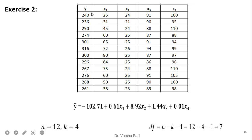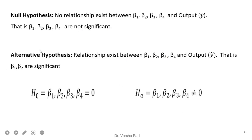Now we start exercise 2. The equation is given where y is the dependent variable and x1, x2, x3, x4 are independent variables. Applying multiple linear regression gives: y-cap equals minus 102.71 plus 0.61 x1 plus 8.92 x2 plus 1.44 x3 plus 0.01 x4. There are 12 total records and 4 independent variables, so the degree of freedom is 12 minus 4 minus 1, which equals 7. In the null hypothesis, variables are not significant; in the alternative hypothesis, all four slopes or coefficients are significant.